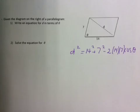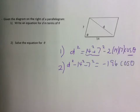So in part two, we're going to need to solve it for theta. So we're isolating theta. So we're going to have first d squared minus 14 squared minus 7 squared equals, so I'm just taking these two right here and moving them to the other side, negative 2 times 14 times 7, which is negative 196 cos theta. Okay, now let's clean up this part right here a little bit, so d squared minus 245.